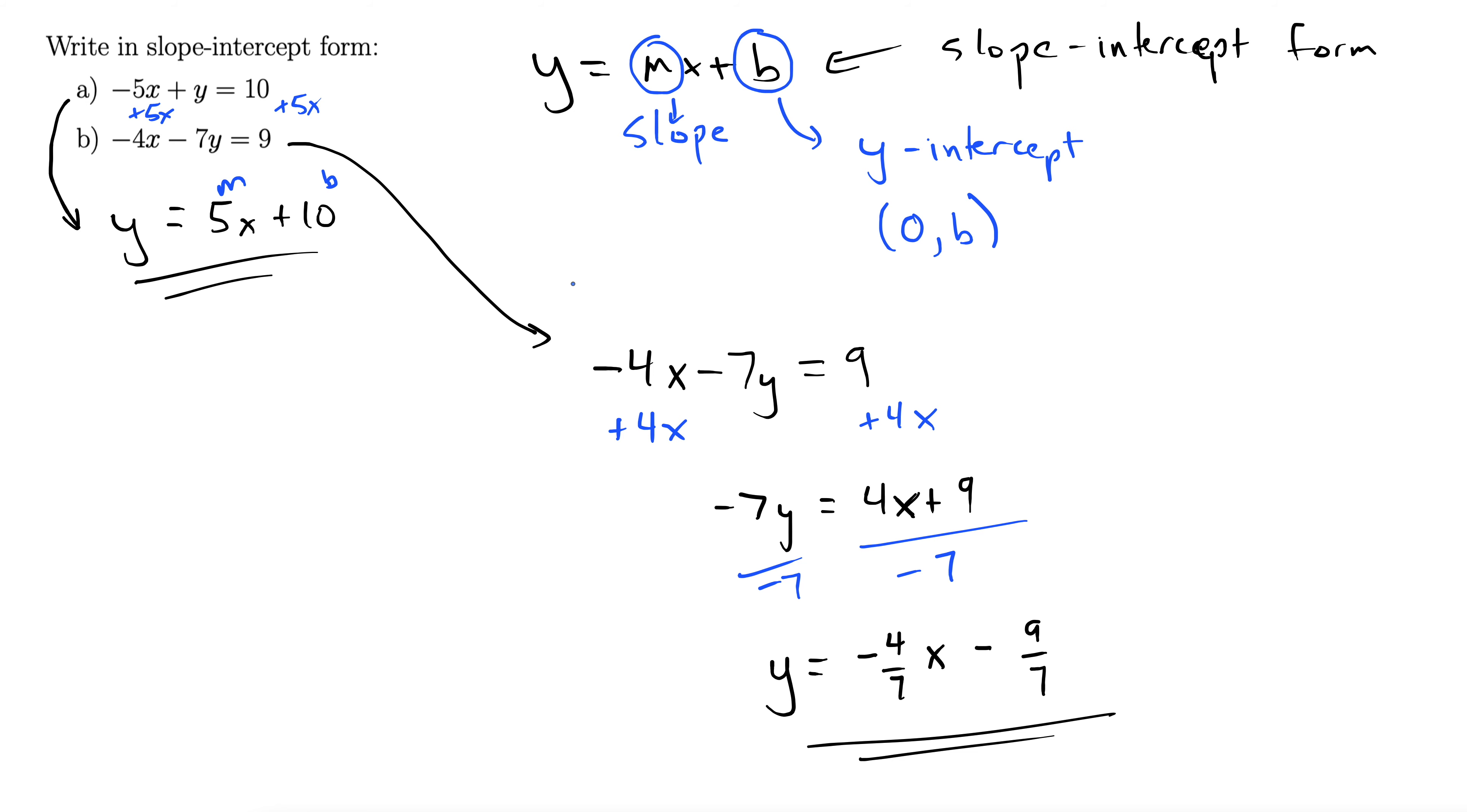From here, we can see that negative 4/7 is our slope and negative 9/7 is our y-intercept. We could write the y-intercept as (0, negative 9/7).